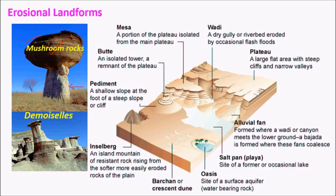The rock at height from the surface undergoes less erosion, giving rise to a mushroom-like structure. Another similar feature is the demoiselle, formed in the same way but with a different shape. The most important erosional landform in arid regions is the plateau — a flat area with steep cliffs and narrow valleys. The plateau has a very hard rock on the surface, which makes erosion less significant there.